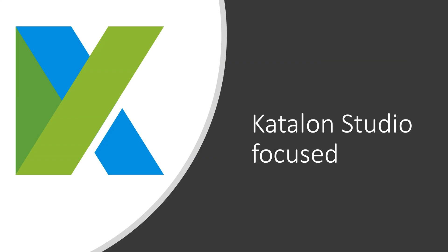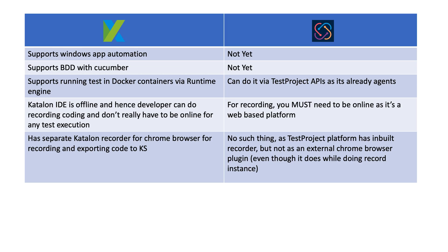Now let's talk about the great things Katalon Studio has that Test Project does not. Katalon Studio supports Windows App Automation, a new feature introduced in Katalon Studio 7 using WinAppDriver, which is not available in Test Project yet. Writing tests in BDD with Cucumber is also available in Katalon Studio from many versions back, which Test Project doesn't support yet. Katalon Studio supports running tests in a Docker container via the Runtime Engine. You can do the same with Test Project free of cost using its API and Agents in a Docker Compose setup, but an out-of-the-box solution is not available in Test Project yet.